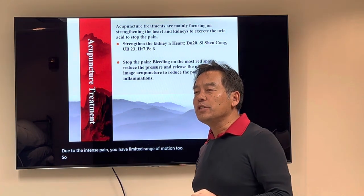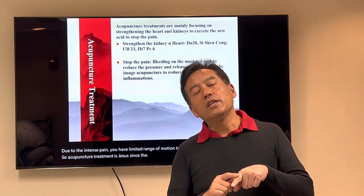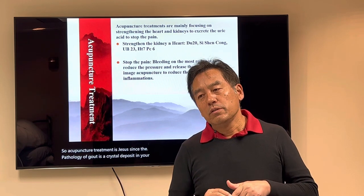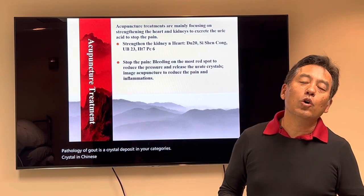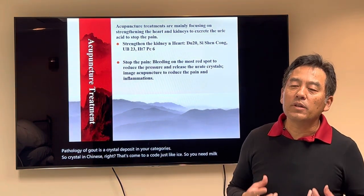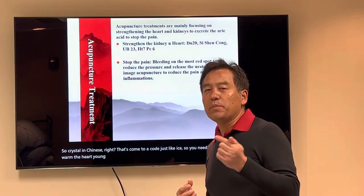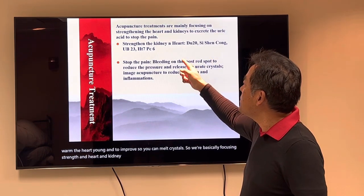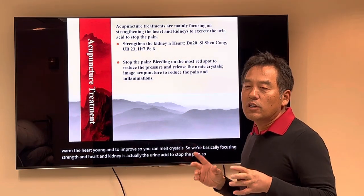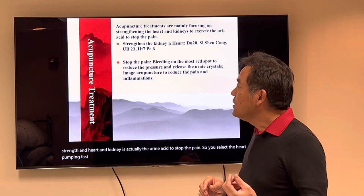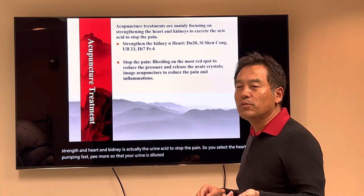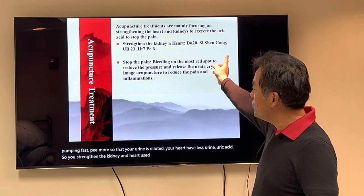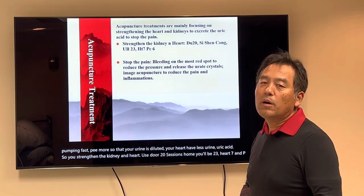Acupuncture treatment is straightforward since the pathology of gout is crystal deposit in your capillaries. In Chinese medicine, crystals are considered cold — like ice — so you need to melt them. You need to warm the heart yang to improve circulation and melt the crystals. We basically focus on strengthening the heart and kidney to excrete uric acid and stop the pain. You make the heart pump faster, pee more, so your urine dilutes and you have less uric acid. Use acupuncture points KD 23, HT 7, and P6 to stop the pain.